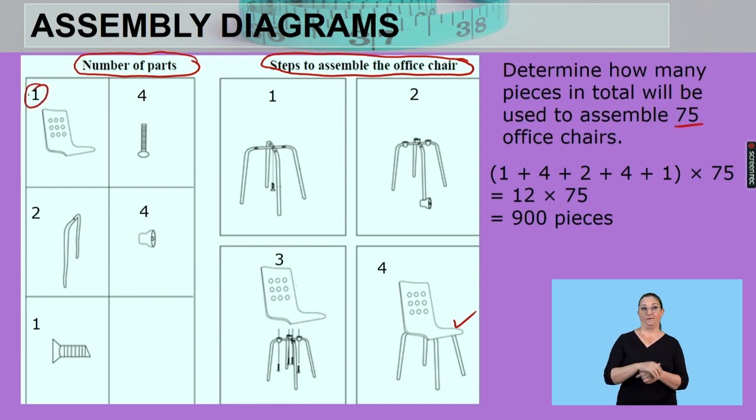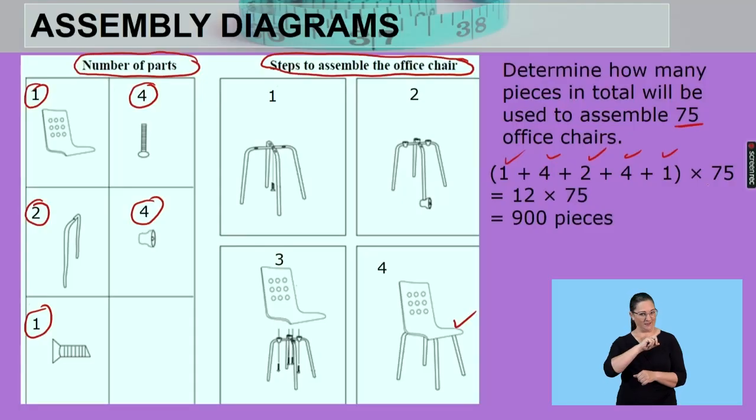One of those, check. Plus four of those, check. Plus two of those, check. Plus four of those, check. Plus one of those. That's the sum of all of those parts to make one chair. But how many chairs are we making? We're assembling 75 office chairs. So that's why I times it by 75. If I add all that up, I get 12 and 12 times 75. There's a total of 900 pieces that could be assembled.